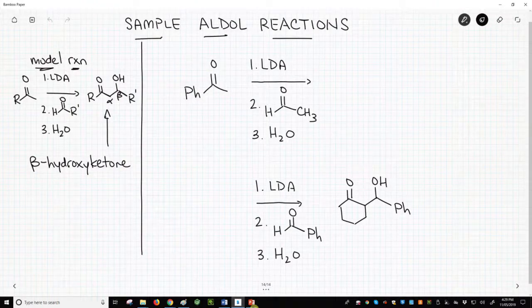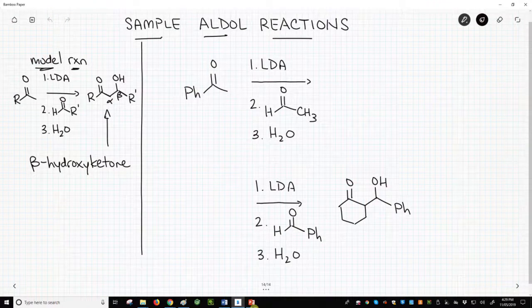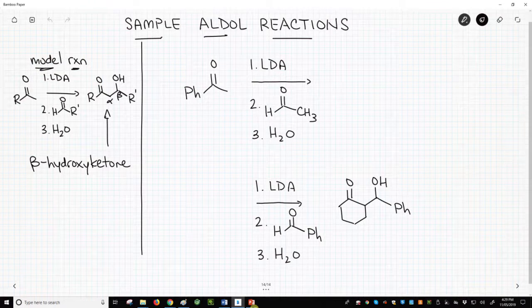To start, on the far left is our model reaction. The aldol reaction normally starts with a ketone. It is deprotonated with LDA to make an enolate at the alpha carbon.